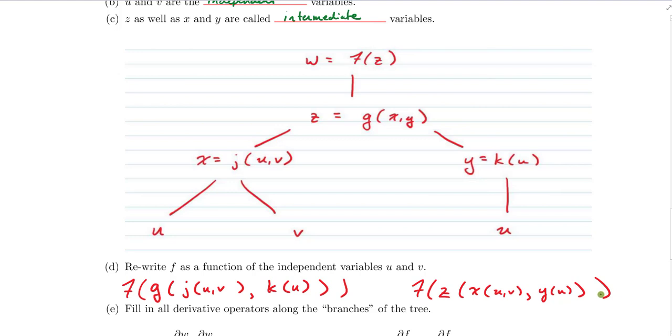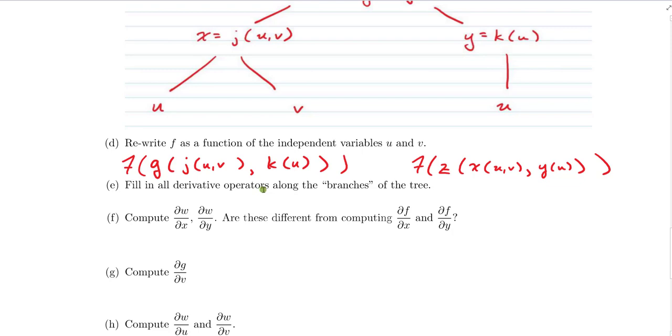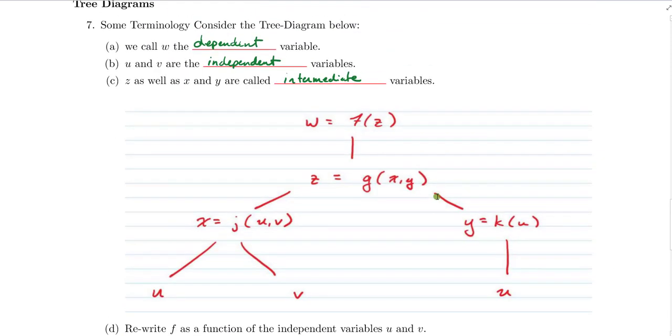The next thing I want to do is I want to look at this diagram, and I want to fill in all of the derivative operations along the branches of the tree. So let's give that a shot here. This would be dw/dz. That's one way to write it. Or we could write df/dz. That's another way we could write it. And then here we would have the partial derivative of z with respect to x, or somebody else might write the partial derivative of g with respect to x. Either of those ways is correct. And over here we would have, let's see here, we're talking about how g changes as y changes. So that would be ∂g/∂y, or that's the same thing as ∂z/∂y, the actual output variable. So you might see either of those notations.